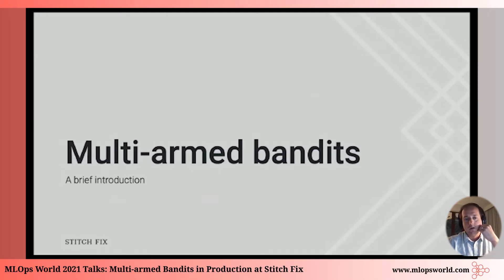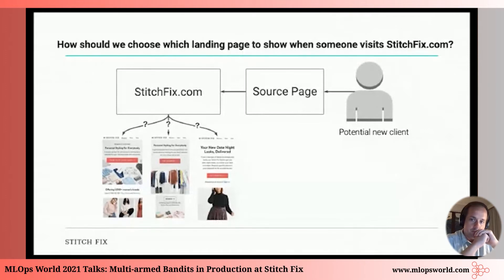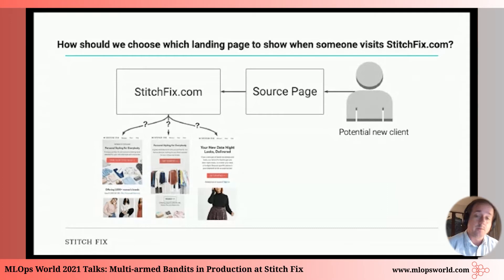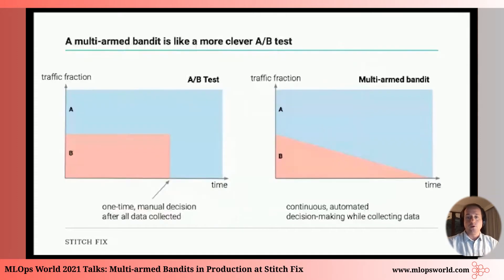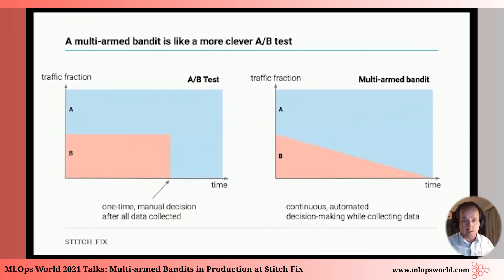Our platform was built for A/B tests, but data scientists really wanted to do multi-armed bandits. A concrete use case: we have a huge variety of landing pages we might show visitors coming to stitchfix.com. A potential new client clicks an ad, ends up on our homepage, and we might have hundreds of page options. An A/B test approach would split traffic over a fixed time period, analyze all the data at the end, and make a one-time manual decision about which variant is better.